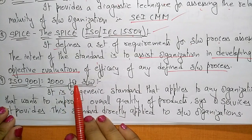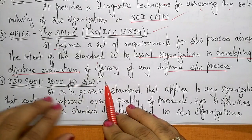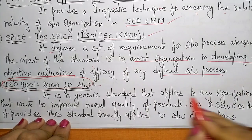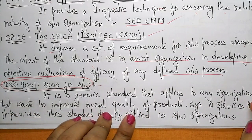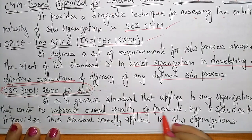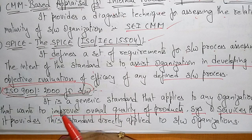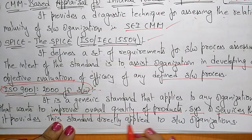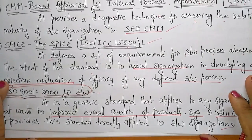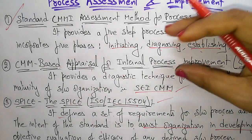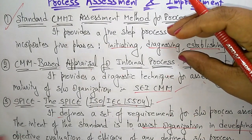The next standardization is ISO 9001:2000 for software. If your software holds this standardization certificate, it indicates that it is a generic standard that applies to any organization that wants to improve the overall quality of a product, systems, or services that it provides. This standard is directly applied to software organizations based on usage, evaluations, requirements, and quality.